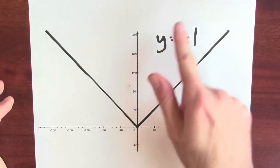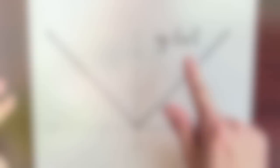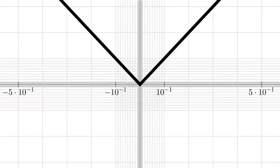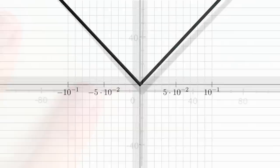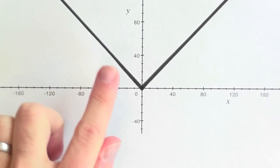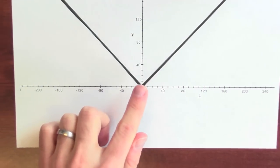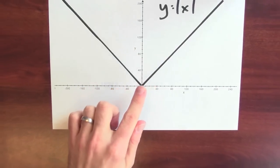This is the graph of the absolute value function. Let's zoom in on the origin. No matter how much I zoom in, this graph doesn't look like a straight line.